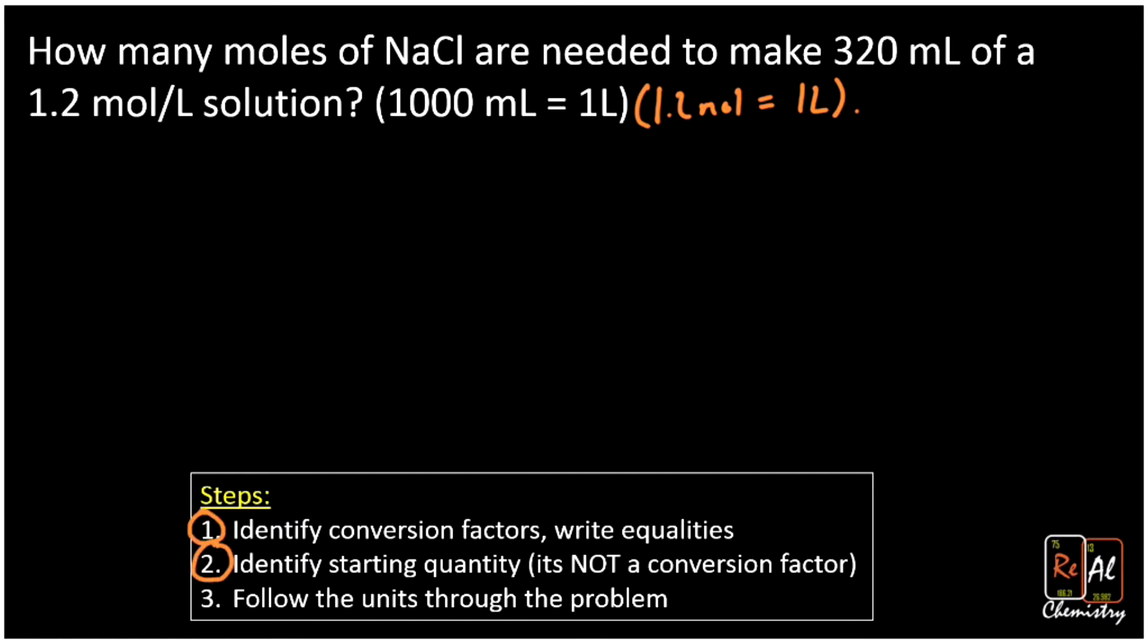Now we're going to identify our starting quantity. In this problem, there's really only one other number, 320 milliliters. And so that's pretty straightforward. We're going to start with 320 milliliters. We know eventually we want to get to moles. We may not know what moles are, or we may, but we know that's what we're going to.